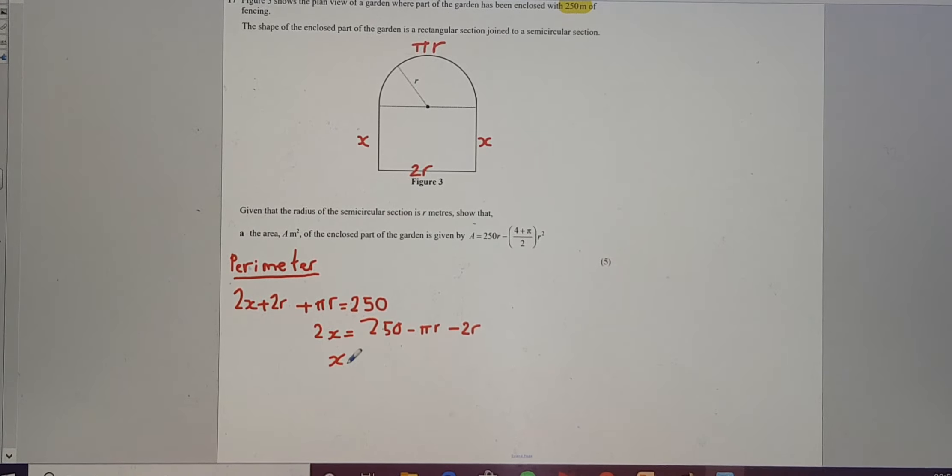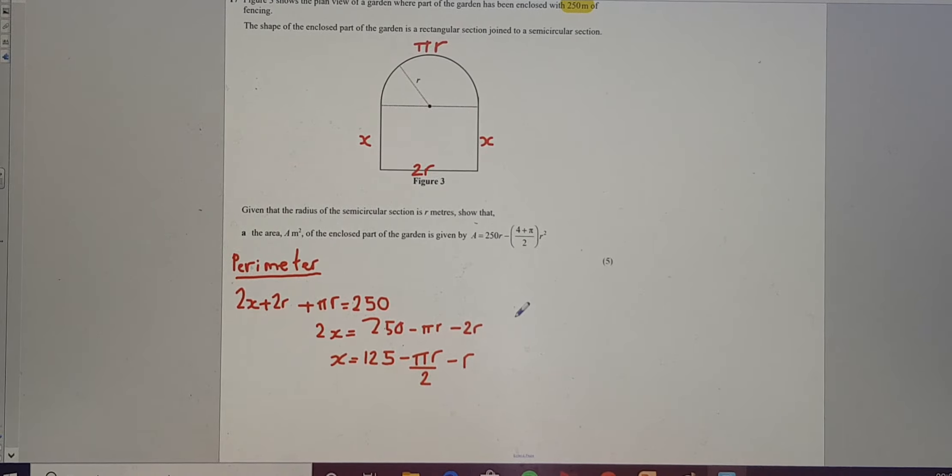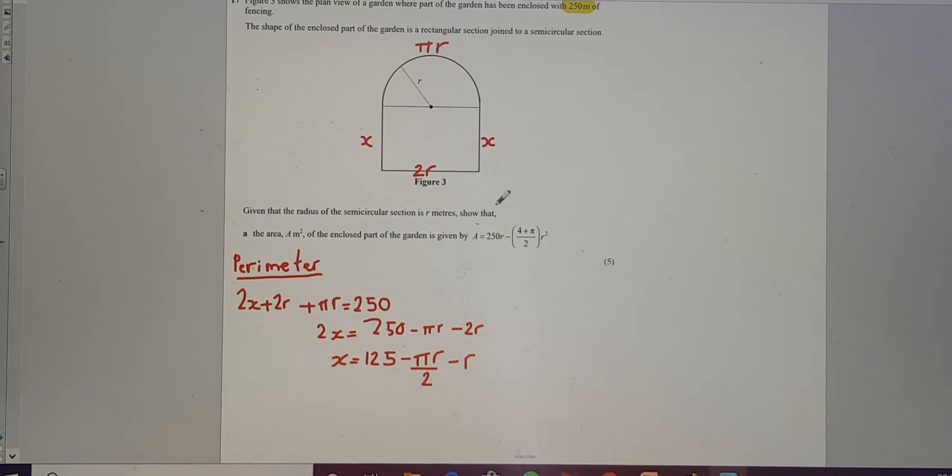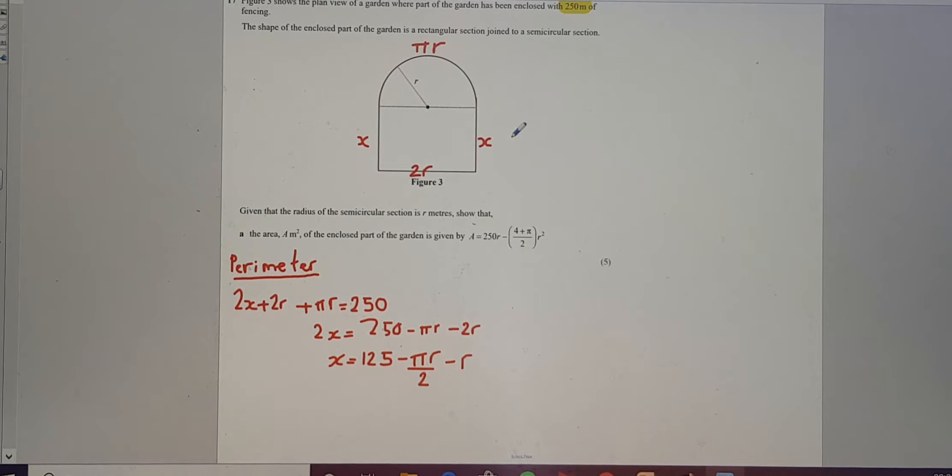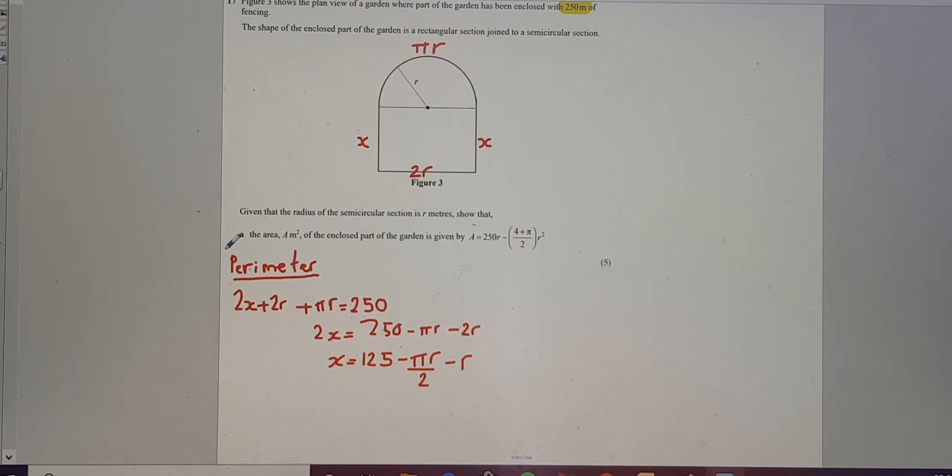Divide through by 2 on both sides. Let me fix that up. In fact, I'm just going to bring 2x over here. 2x equals 250 minus pi r minus 2r. Therefore, x equals 250 divided by 2 is 125, minus pi r over 2, minus 2r divided by 2 is just minus r. I now have an expression for x in terms of pi and r. So I'll put them into this thing here in a second. Okay, now I've done everything. The purpose of them giving me the perimeter was so I could come up with an expression for x in terms of pi and r, which I'll then put into the expression that I'm going to create for the area.